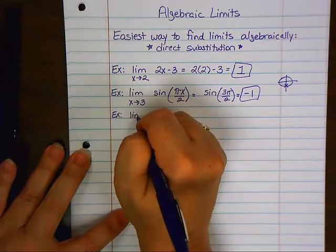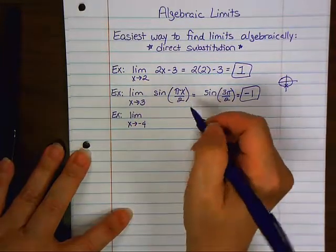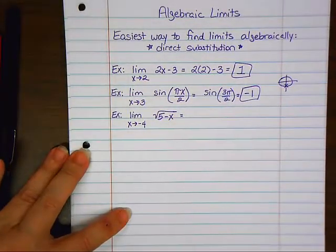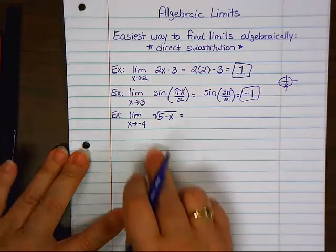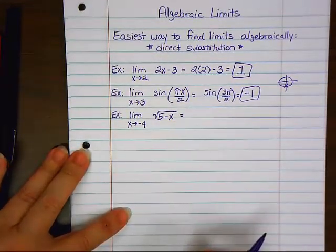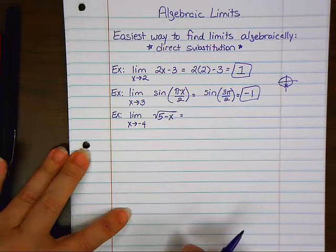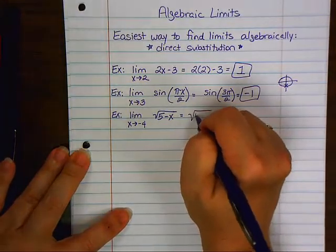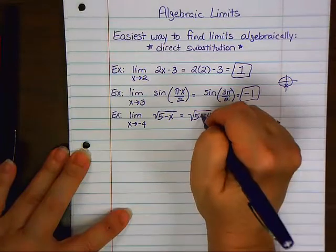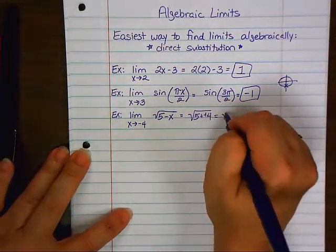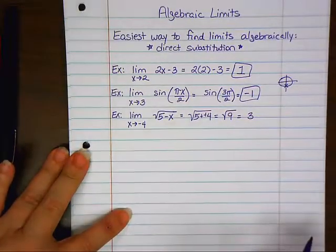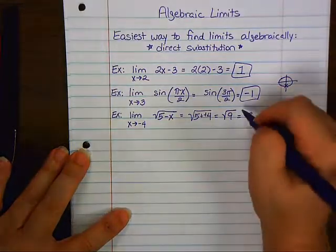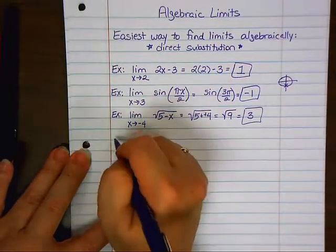Next problem. The limit as X approaches negative 4 of the square root of 5 minus X. Can I substitute negative 4 in there and get a real number answer? Yes. 5 minus negative 4, which becomes plus, which becomes the square root of 9, which is 3. If you come out with something like the square root of negative 2, then that does not exist because it has an i in it.